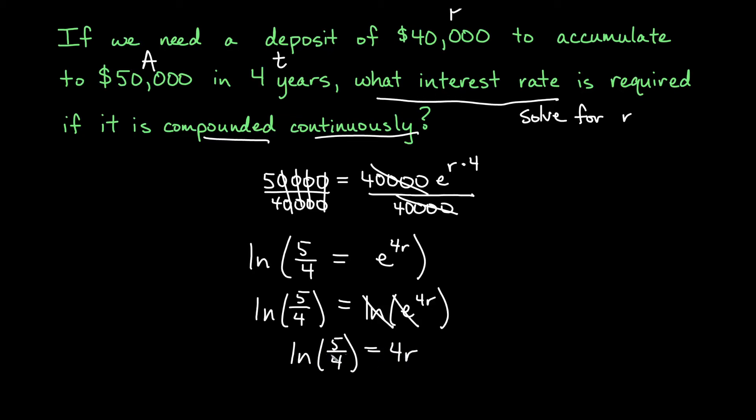And then we'll just simply need to divide both sides by four. So we'll get that r is equal to the natural log of five over four divided by four.